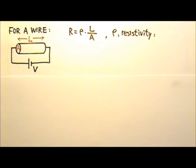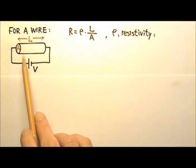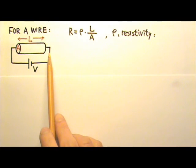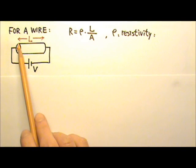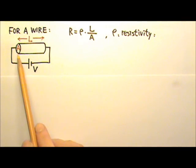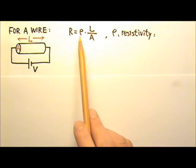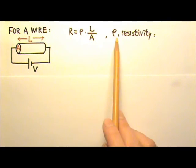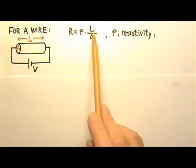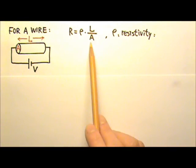Now let's look at the resistance of a wire. For a wire with length L and cross-sectional area A, it is found that the resistance of the wire is rho, the resistivity, times L divided by A.